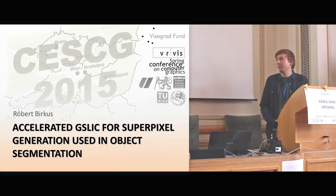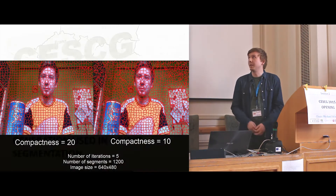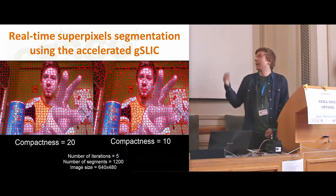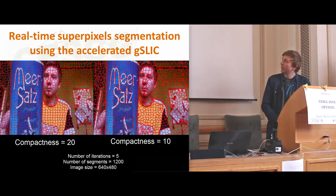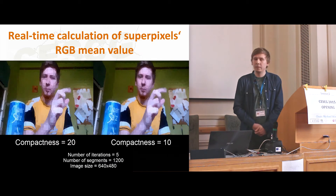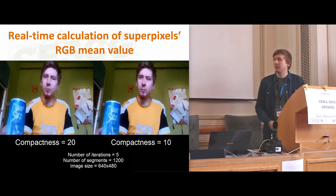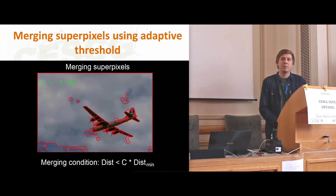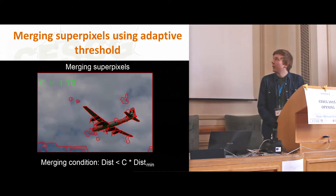My name is Robert Birkuš and our main goal is to review object segmentation using superpixels. Here you can see the superpixel segmentation using our accelerated G-SLIC implementation, and the calculated RGB mean value of the superpixels in real-time. Here you can see the superpixel managing algorithm using an adaptive threshold. Thank you very much.